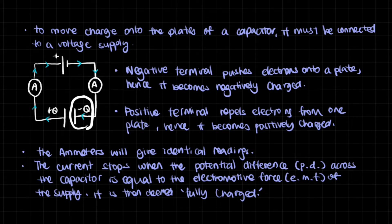It's the same for the positive terminal. The positive terminal repels electrons from one plate. Hence, it becomes positively charged. Now, we know that this is positive. So the electrons within the wire will be attracted to that. And they will flow towards the positive terminal.